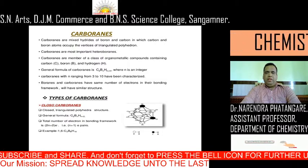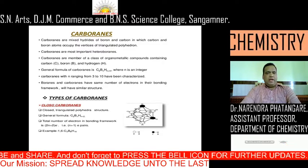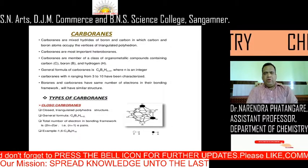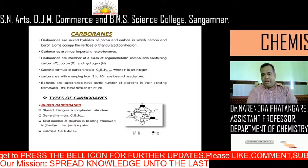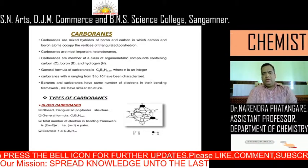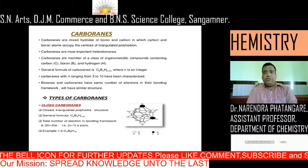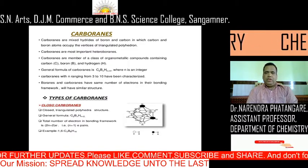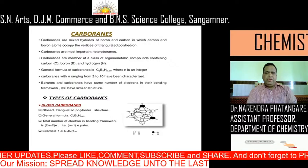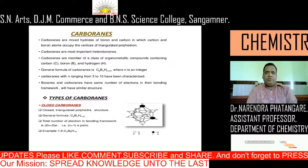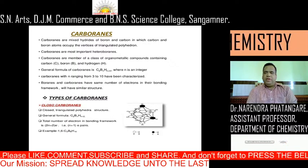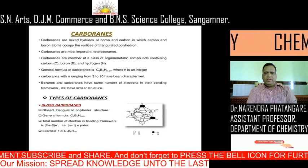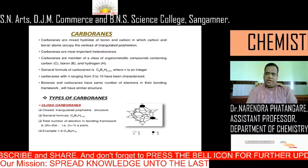Types of carboranes: First, closo carboranes have a closed triangulated polyhedral structure. General formula is C2BnHn+2. The total number of electrons in the bonding framework is 2n+2 electrons, that is n+1 electron pairs. For example, C2B8H10.